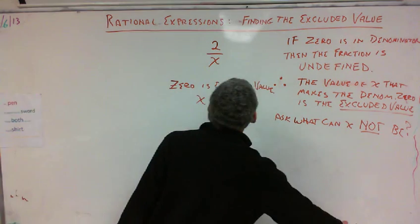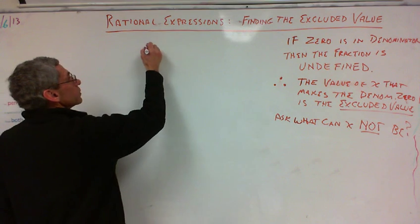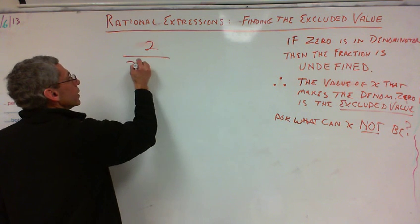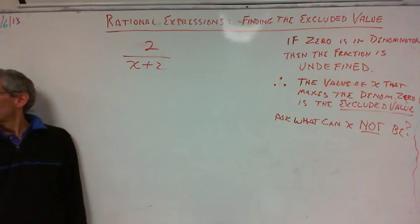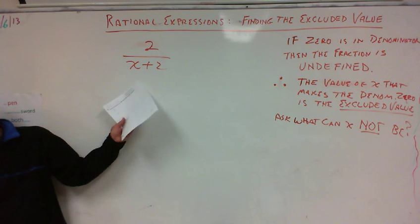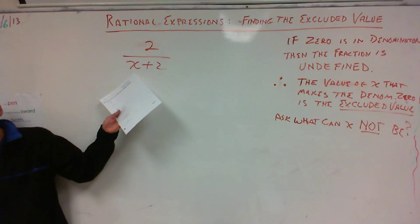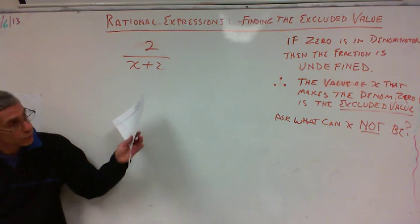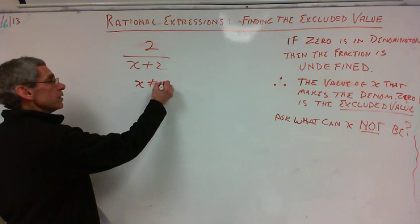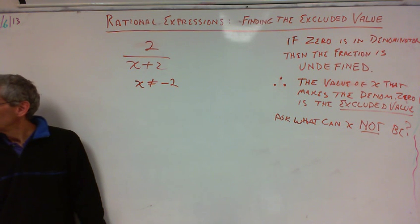So, what if I had two over x plus two? Can you see? What can X not be? What would make X plus two equal to zero? Right. See how, if I put a negative two in for X, then I'd have a zero in the denominator. I can't have that. So therefore, X cannot equal negative two. That's my excluded value. Negative two. That make sense?